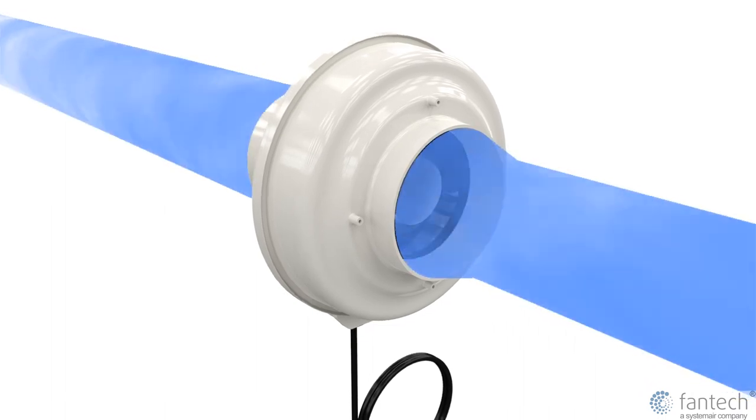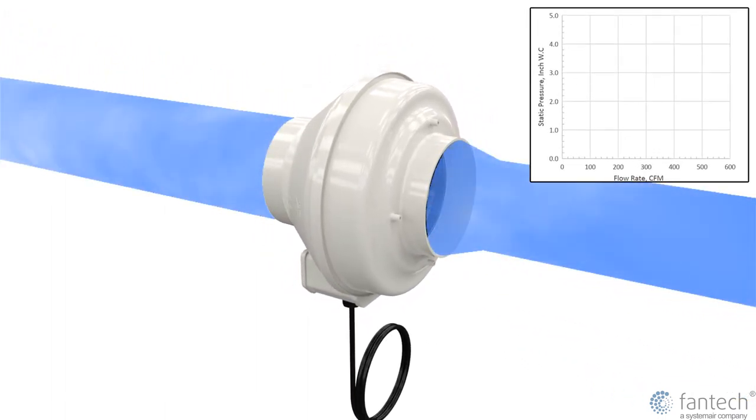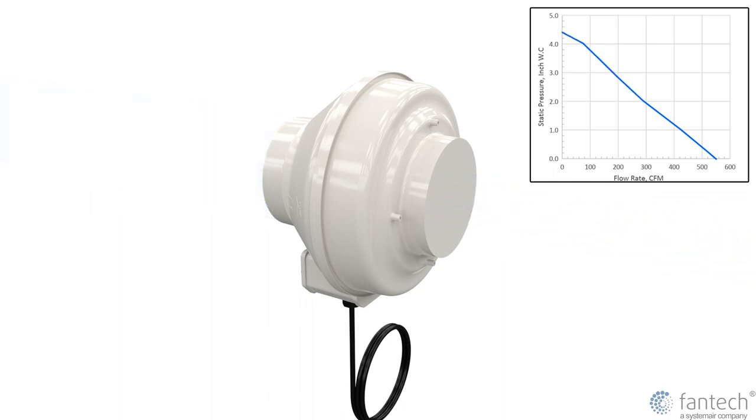When a fan is restricted, its flow rate reduces. Fan performance can be shown by plotting pressure versus flow rate.